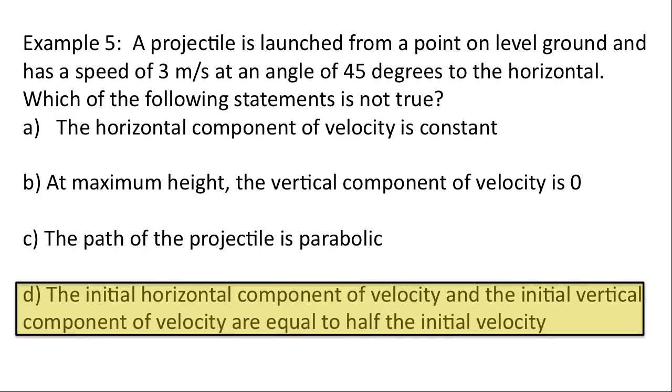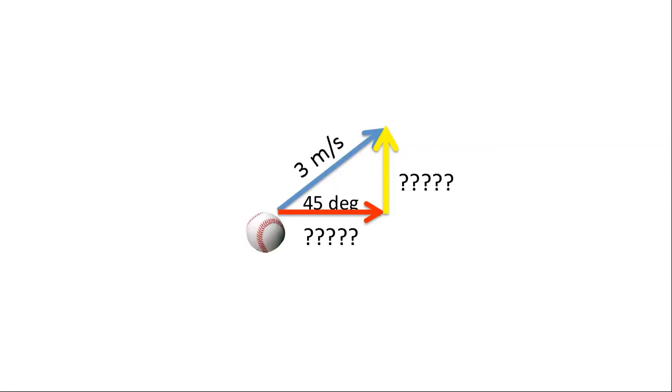And so the answer is D. The initial horizontal component of velocity and the initial vertical component of velocity are equal to half the initial velocity. This is not true. Why is that? Well, here's the vector. And I'd like you to show this. I'd like you to show this as an example. You're going to see, in fact, that it's not half the value.